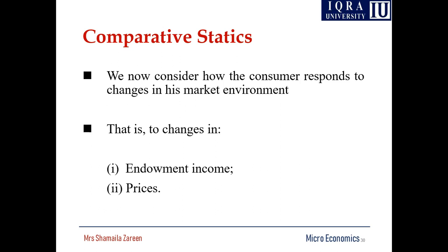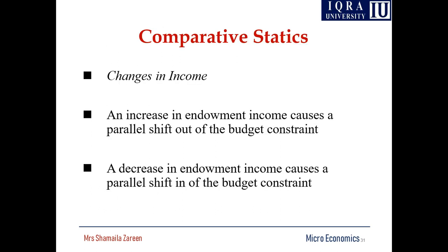Whenever we discussed about the budget line, it was dependent on prices and income — we considered how the consumer responds to change in his market environment. So the budget line can shift because of income and prices. First of all, the budget line can change with income: an increase in endowment income causes a parallel shift out of the budget constraint.